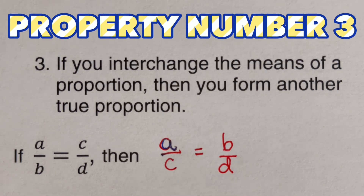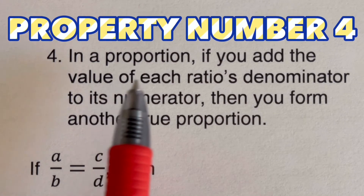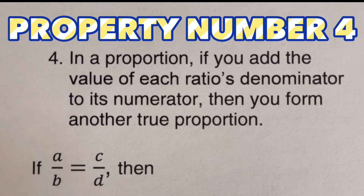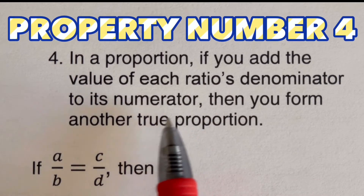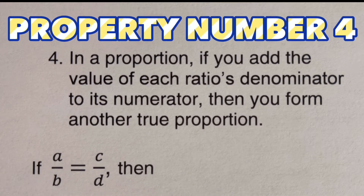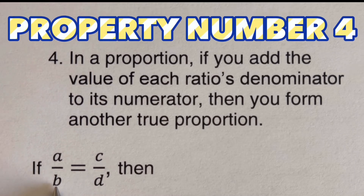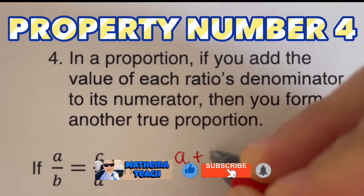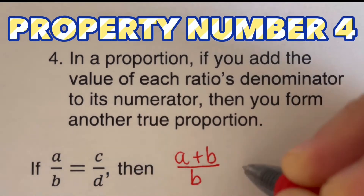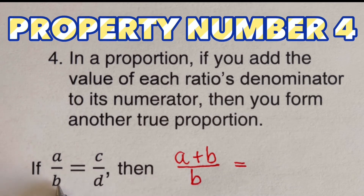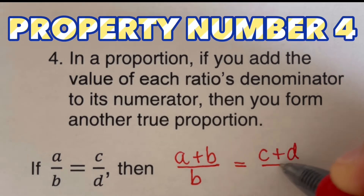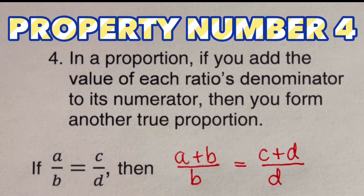Now let's move on to the fourth property of proportion. The fourth property states that in a proportion, if you add the value of each ratio's denominator to its numerator, you form another true proportion. So if A over B equals C over D, we add B to the numerator on the left to get A plus B over B, and add D to the numerator on the right to get C plus D over D.